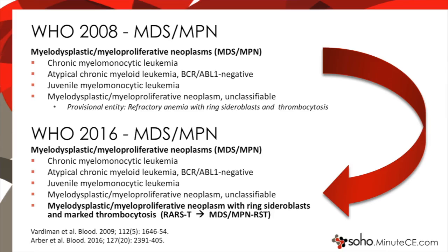MDS-MPN were first brought about as a distinct subclassification of myeloid disease in the WHO 2008 classification schema. These include CMML, JMML, atypical CML, and MDS-MPN-U. In 2008, MDS-MPN-U had a subcategory entitled RARS-T. RARS-T is now its own separate subclassification — myelodysplastic myeloproliferative neoplasm with ring sideroblasts and marked thrombocytosis, or MDS-MPN-RST.